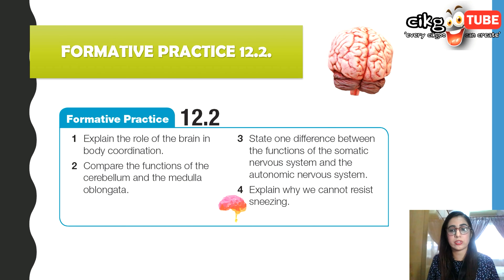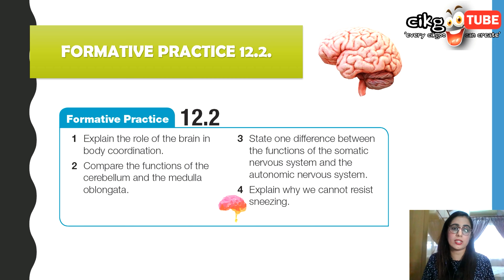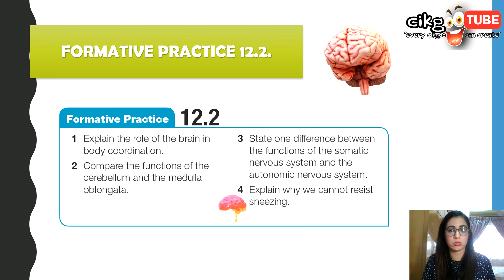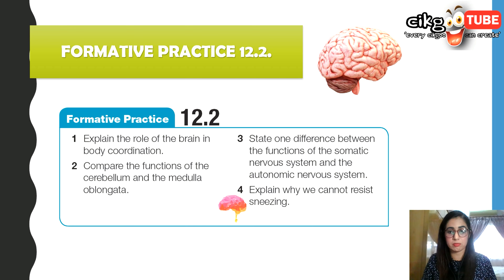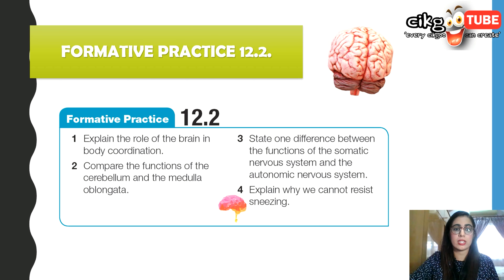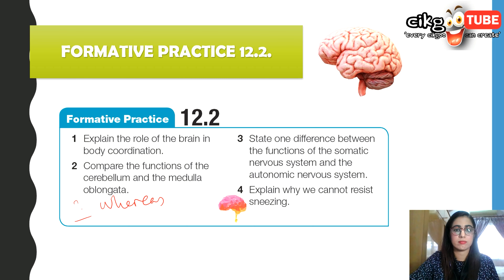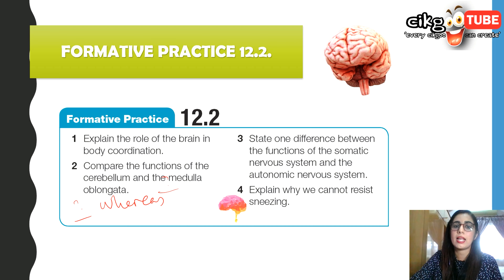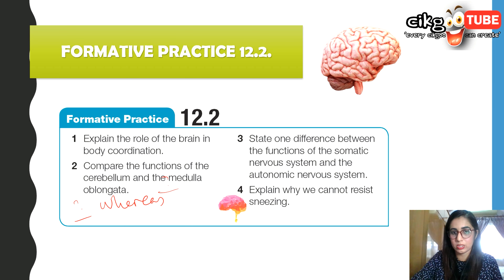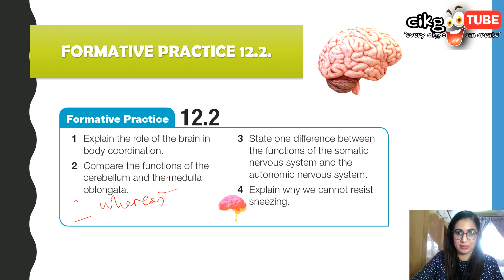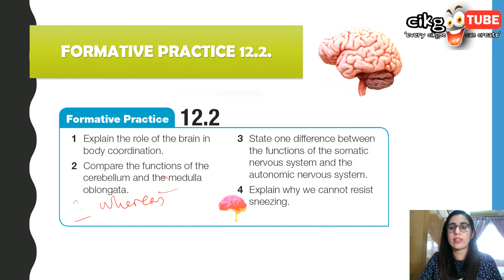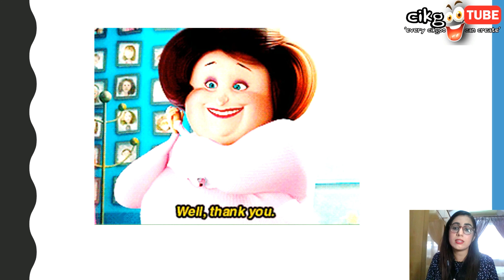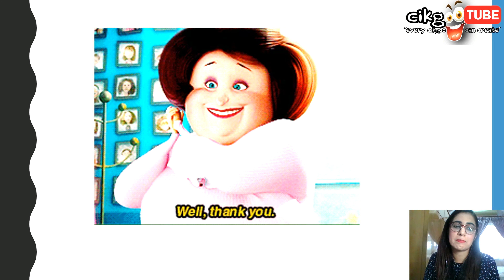Please go and do formative practice 12.2 — there are only four questions. For example: explain the role of the brain in body coordination; compare the functions of the cerebellum and the medulla oblongata; state one difference between the somatic nervous system and the autonomic nervous system; and explain why we cannot resist sneezing. Answers will be given in the description box below. With that, we are done with today's lesson. I hope you learned something — please like and subscribe to the channel. Bye-bye.